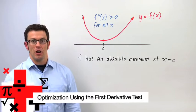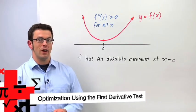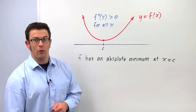We have one more optimization method to talk about, and it's the second derivative test for absolute max and min. Let me show you how it works.